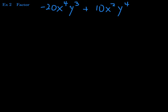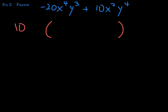Look at this binomial — two terms. We're going to factor out the greatest common factor. The coefficients are negative 20 and positive 10. The largest number that goes into both 20 and 10 is 10. For the x's: x to the 4th and x squared — the greatest is x squared, which is the smaller of the two exponents. For the y's: y cubed and y to the 4th — the smallest is y cubed, so that's how many we'll factor out.